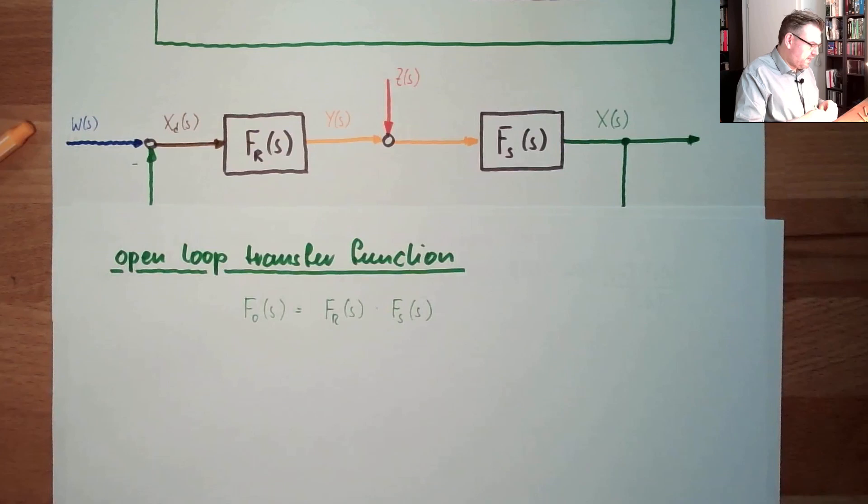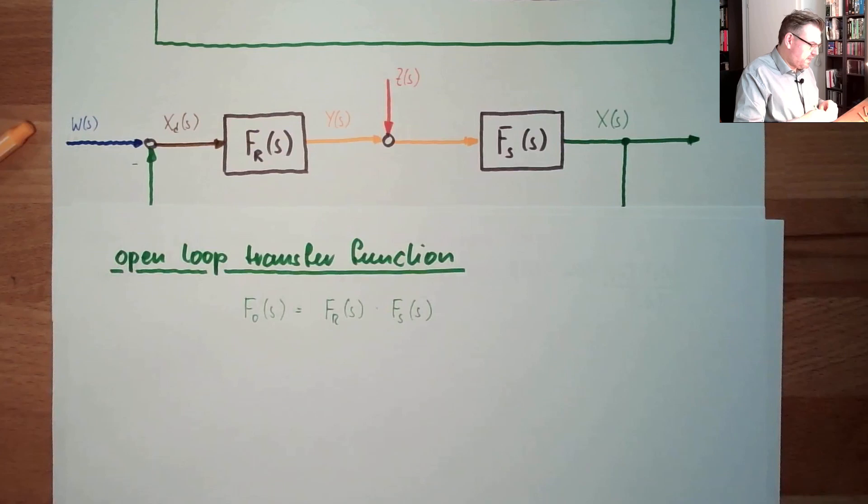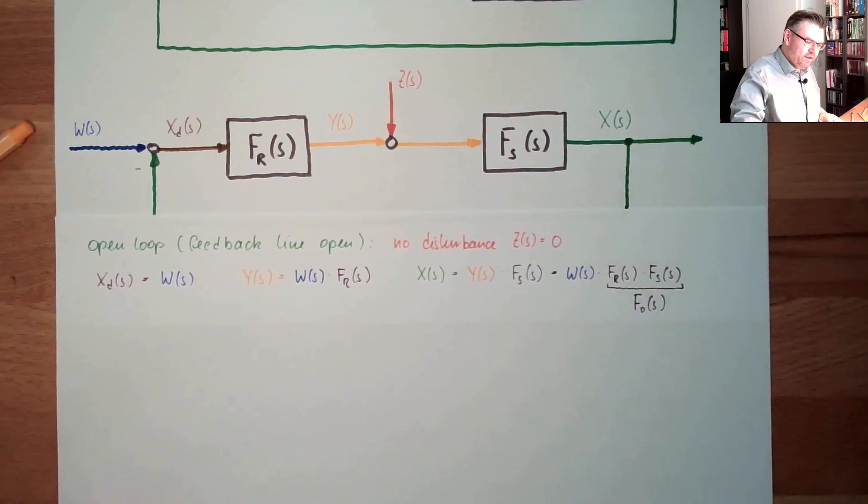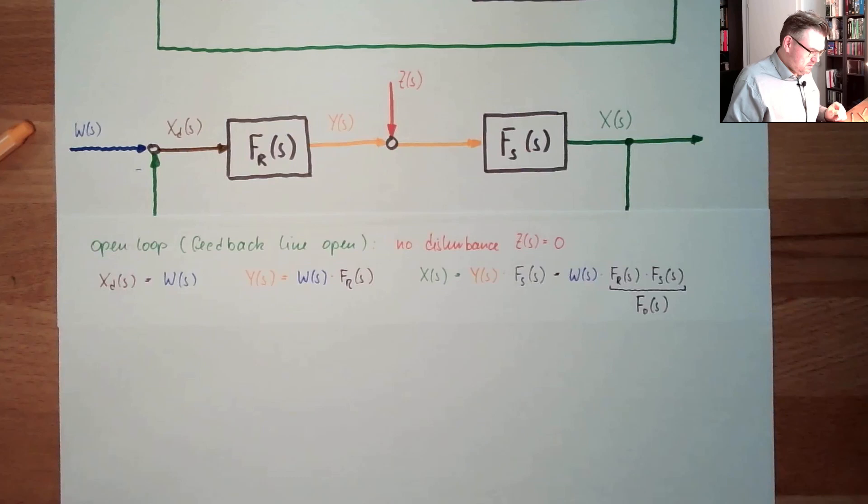We just calculate it. Now it looks a little bit strange. Why have we calculated the open loop transfer function? There is no obvious reason for us — but I tell you, there is. Let's calculate the next steps.